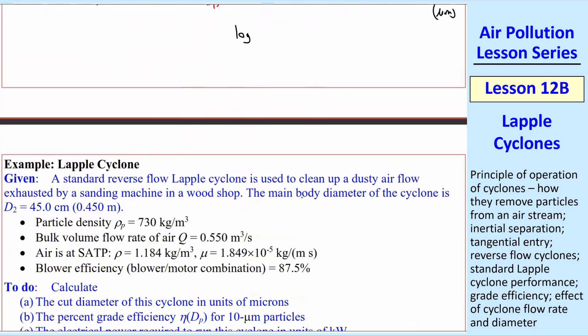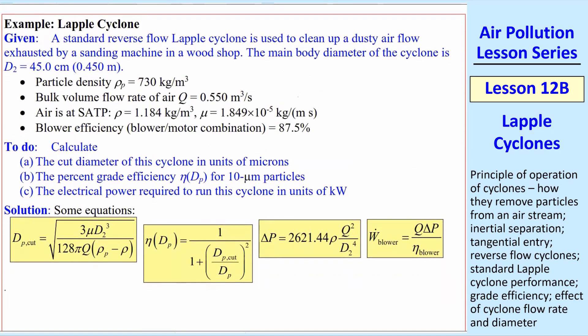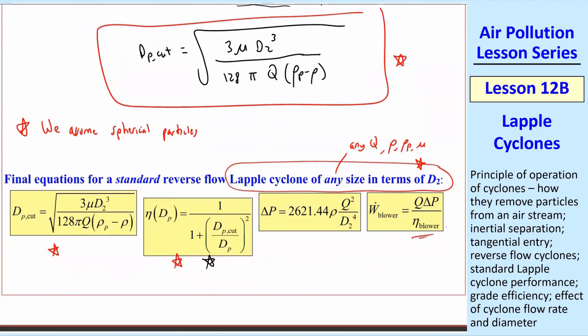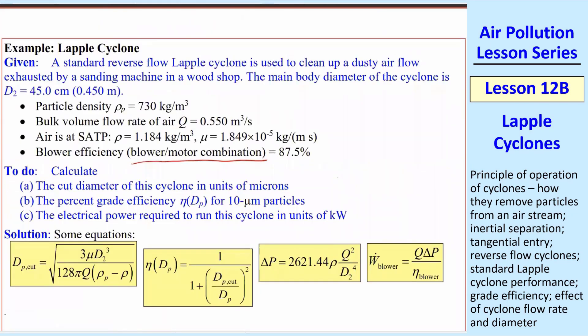Lapple cyclones have an S curve. We have all the equations. I now want to just do an example. Standard reverse flow Lapple cyclone, cleaning up some dusty air from a sanding machine in a wood shop. We're going to assume particles are spherical. The main body diameter, that D2, is 45 centimeters. I give you the density of wood here, bulk flow rate, air is at SATP, the blower efficiency. When I say blower efficiency, this is blower-motor combination. So this eta here, this eta_blower, is typically for the blower and the motor.